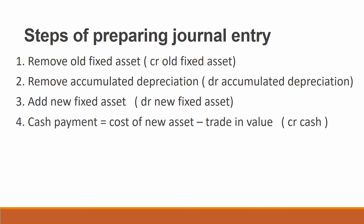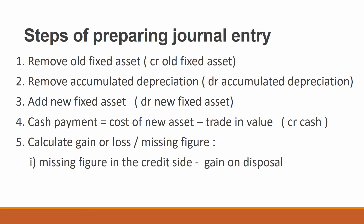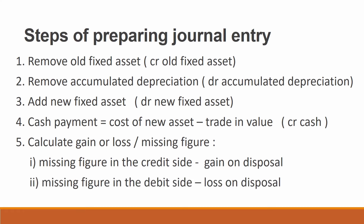The fourth step: we must calculate the cash payment, which is the cost of the new asset less the trade-in value — credit cash in the journal entry. The last step: calculate gain or loss as the missing figure. If the missing figure is on the credit side, there is a gain on disposal. If the missing figure is on the debit side, there is a loss on disposal.